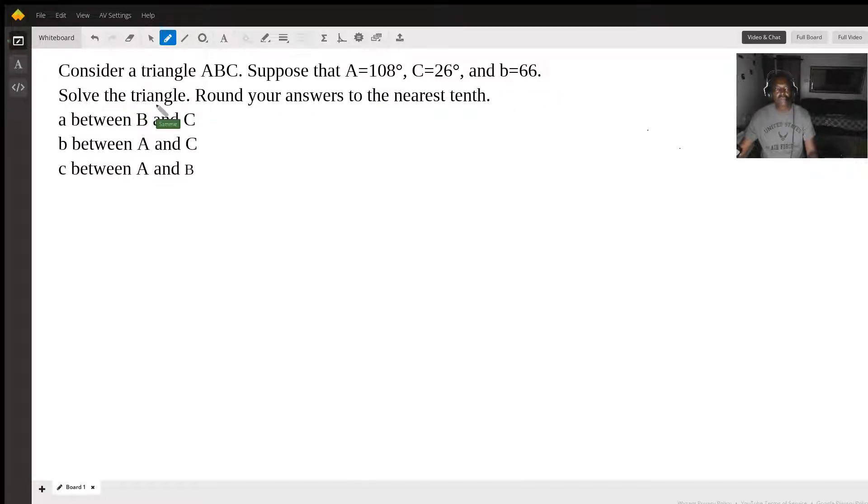Solve the triangle. Round your answer to the nearest tenth. Side A, B, C are here. A is between B and C, B is between A and C, and C is between A and B.